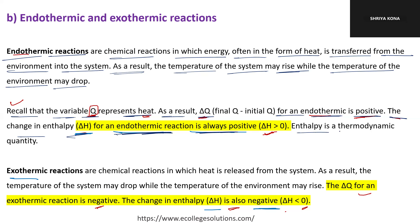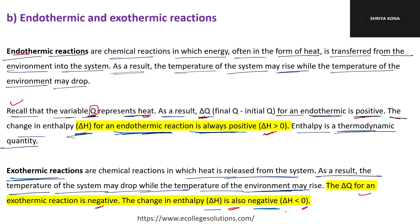The change in enthalpy, delta H, of an endothermic reaction is positive — heat Q is taken up by the system. For an exothermic reaction, the reverse occurs: heat is released from the system. As a result, the temperature of the system may drop while the temperature of the environment may rise. Energy is lost from the system, given to the surroundings. So delta Q and delta H for exothermic reactions are negative.